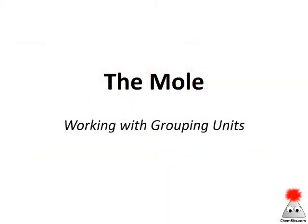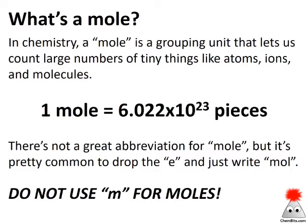The mole is a pretty ubiquitous concept in chemistry. We use it in an awful lot of the problems that we work with, and it really is a useful and helpful tool. Let's take a look at how we can use the mole and what it is. A mole is really just a grouping unit — a way for us to count a large number of tiny things and express it in a way that doesn't seem like such a large number. One mole is 6.022 times 10 to the 23rd pieces. This relationship holds whether we're talking about atoms, ions, molecules, or soccer balls — it doesn't really matter. 6.022 times 10 to the 23rd pieces is what we call one mole.